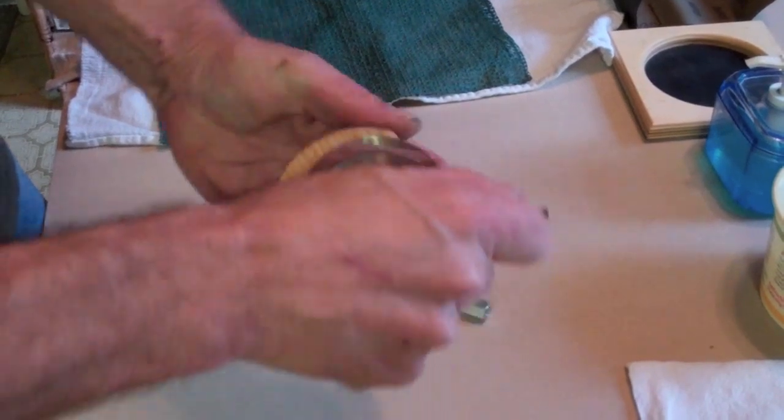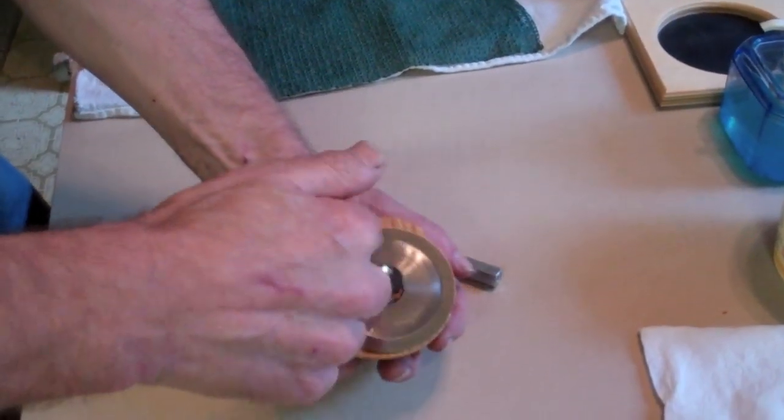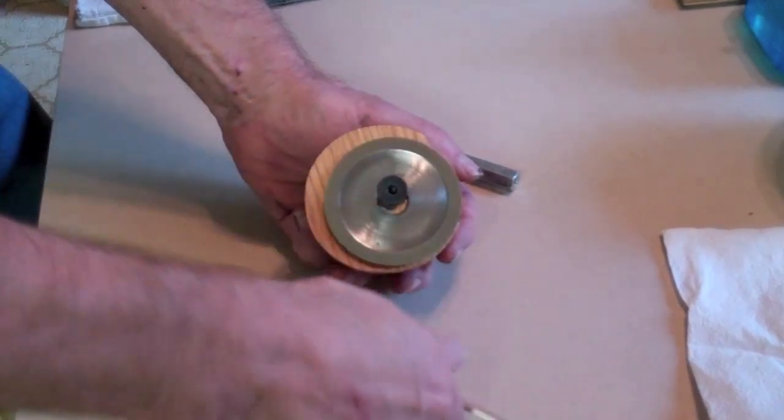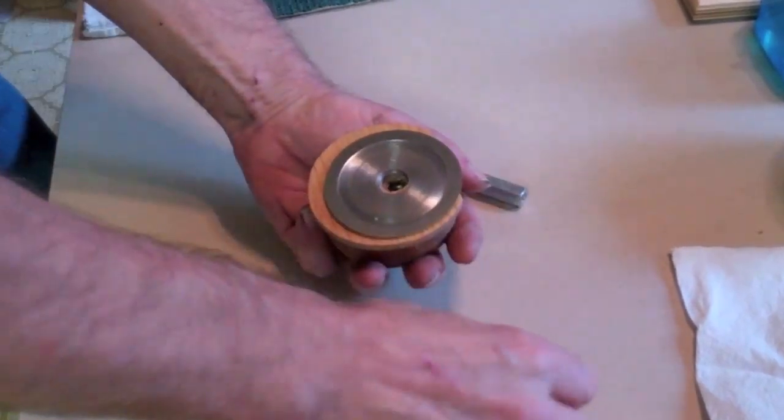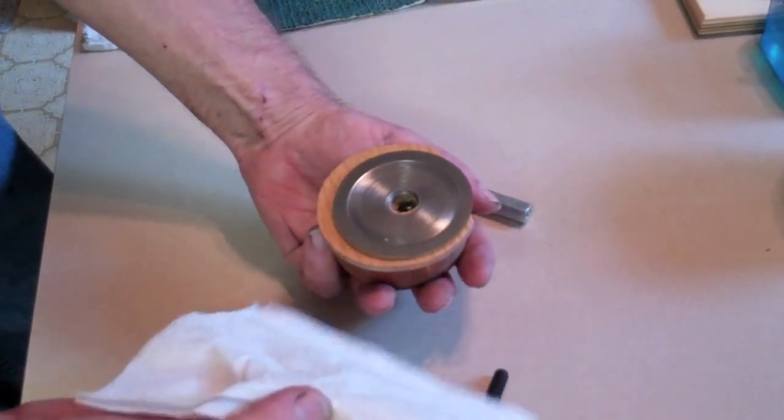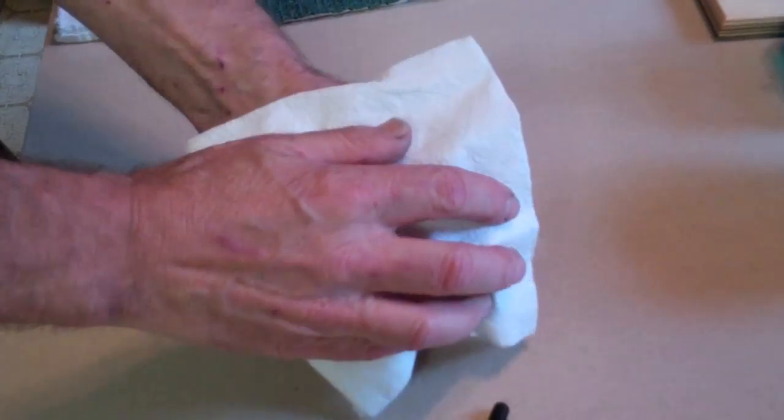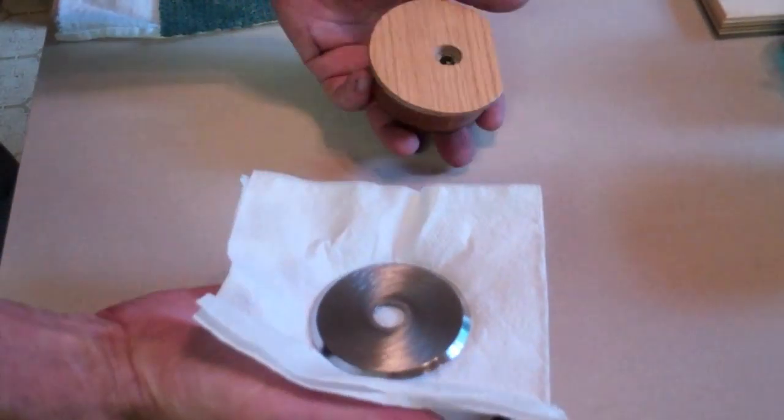You take the Allen wrench, you loosen the screw. Make sure you don't grab the blade with your fingers, but use some kind of a cloth or napkin or something to keep from getting cut. There may be sharp edges still.